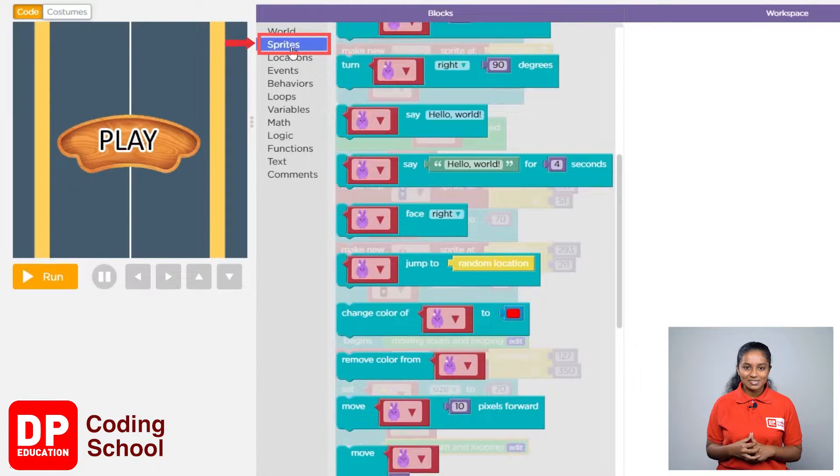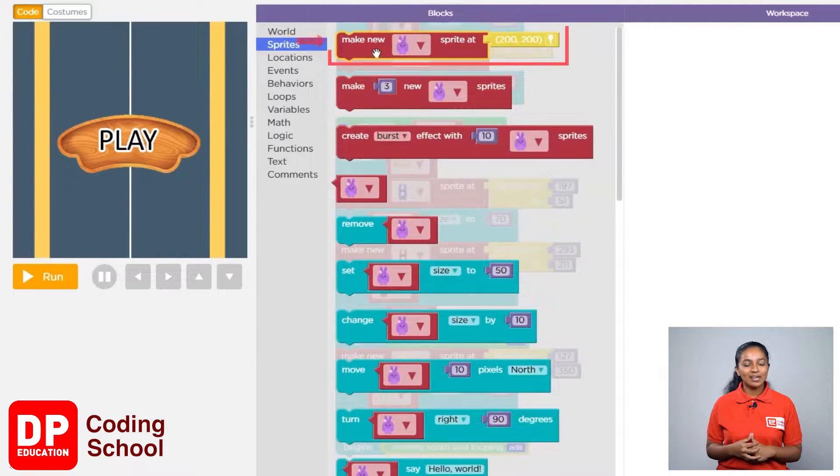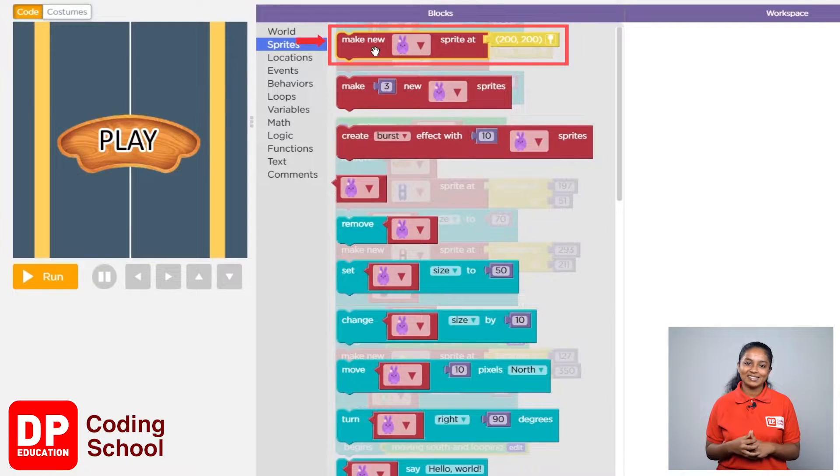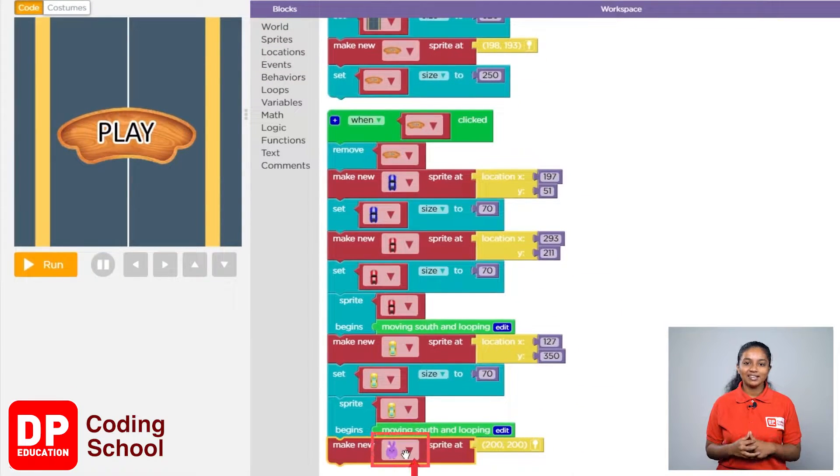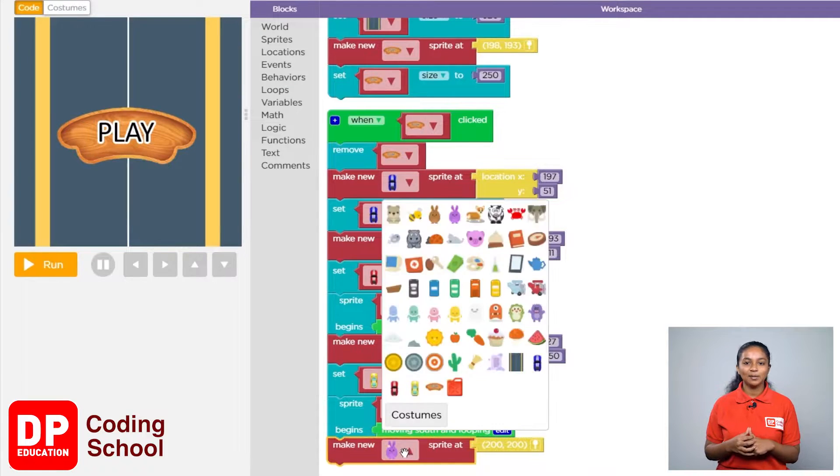I'll click on Sprites, then drag the Make New Sprite Add block like this. Next, click the small arrow and select the petrol can.